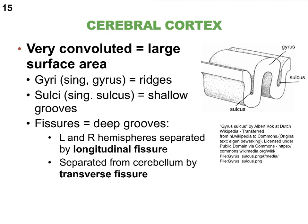Last time we started to look at the cerebrum, and we learned that the three subparts from most superficial to deeper are the cerebral cortex, followed by the white matter, and then followed by something we call the basal nuclei, sometimes called the basal ganglia. I prefer to call them the basal nuclei, and I will explain better why.